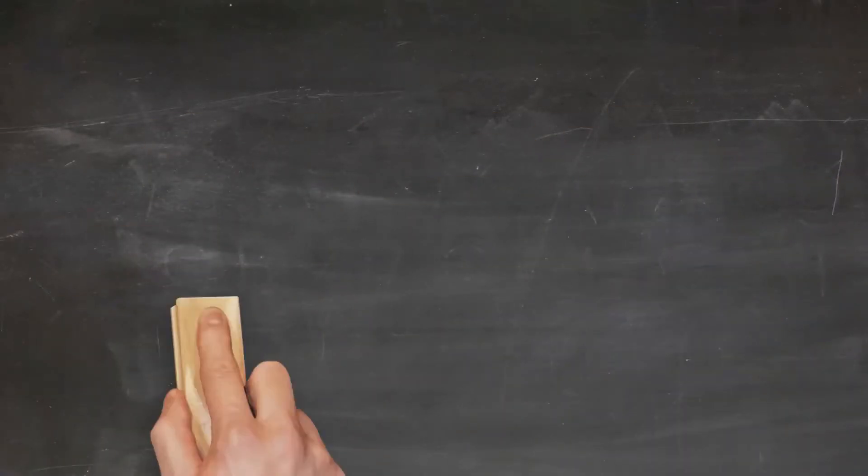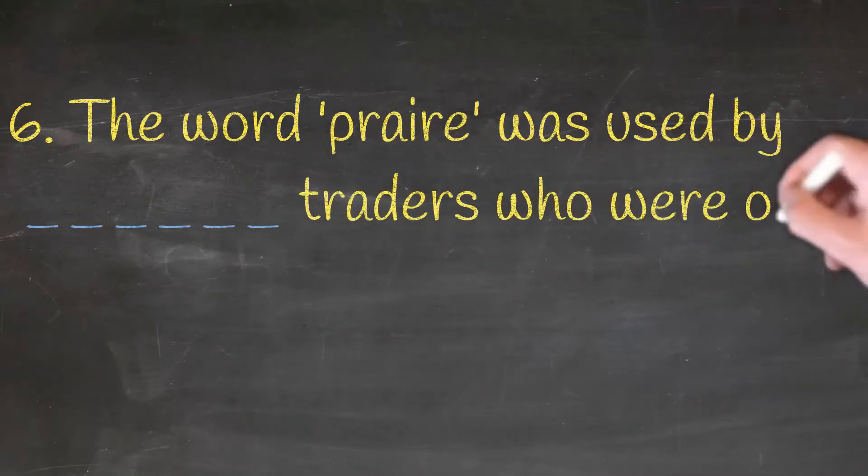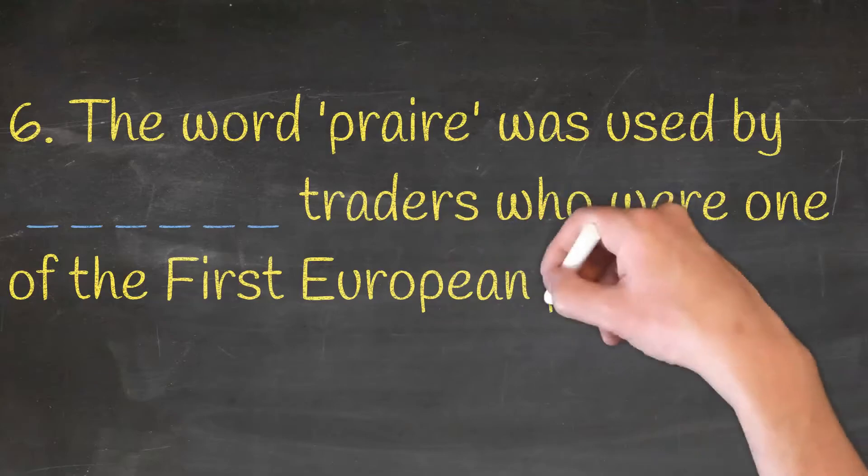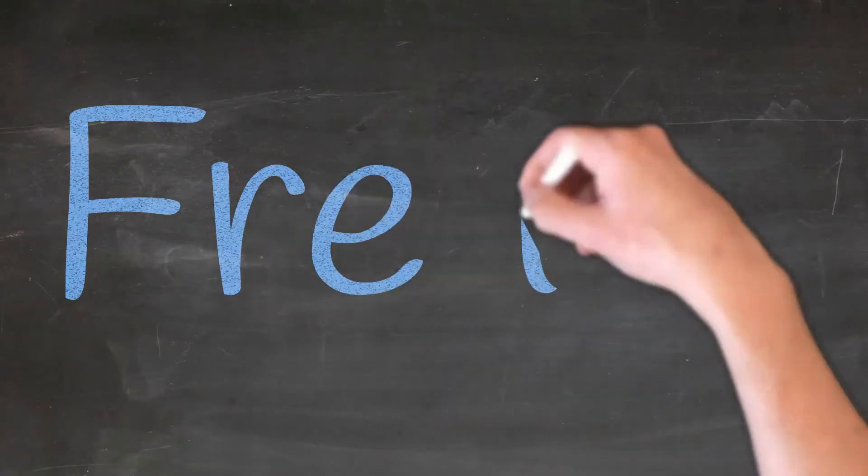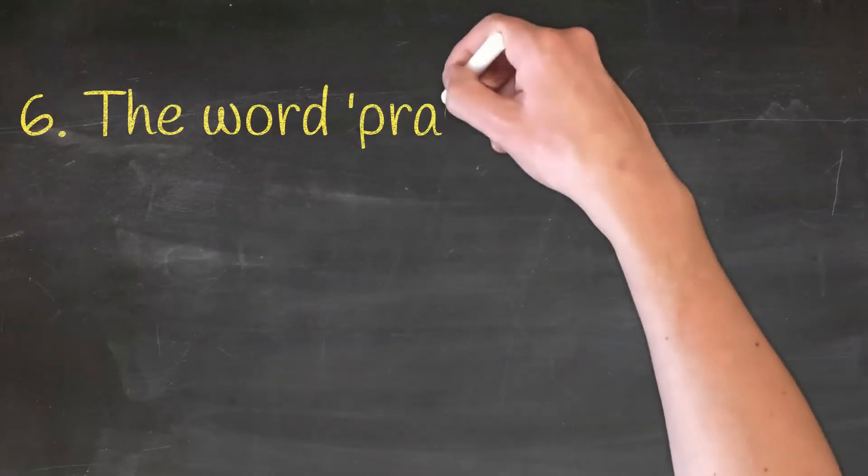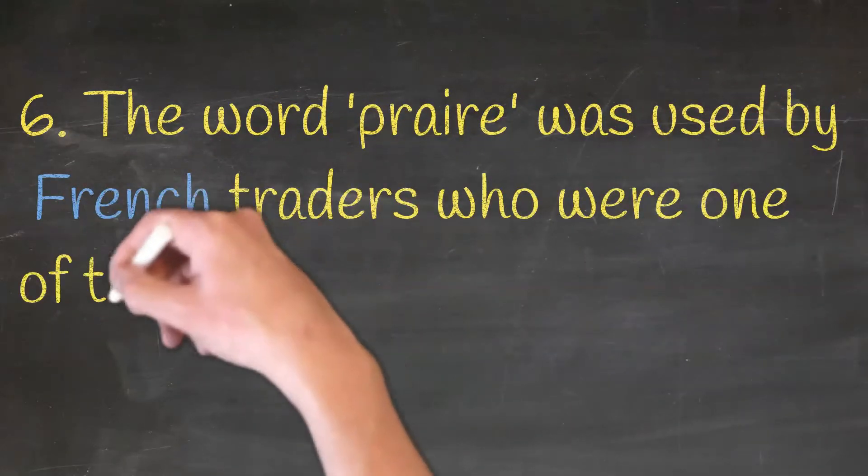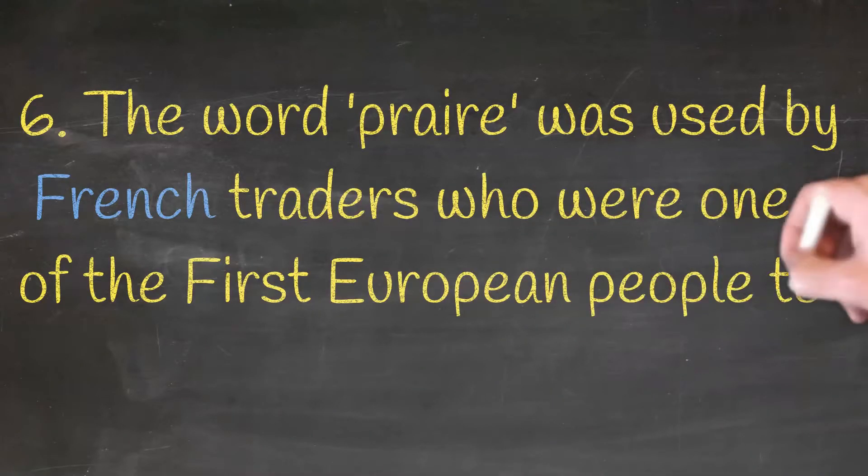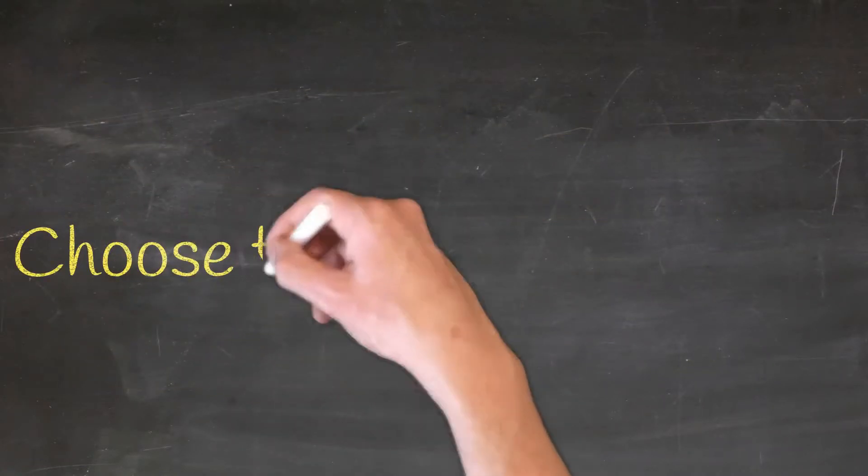The word prairie was used by dash traders who were one of the first European people to see such open grasslands. French. The word prairie was used by French traders who were one of the first European people to see such open grasslands. Now, choose the correct answer.